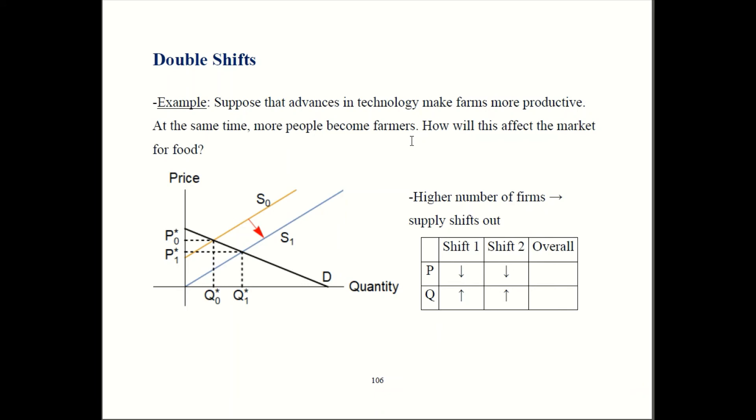So, these new farmers out there are producing food in addition to the old farmers and the old food that's being produced, that's going to expand supply. Supply shifts out, and now we're on S1 over here instead of S0.